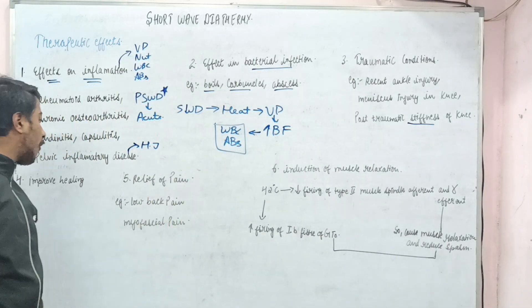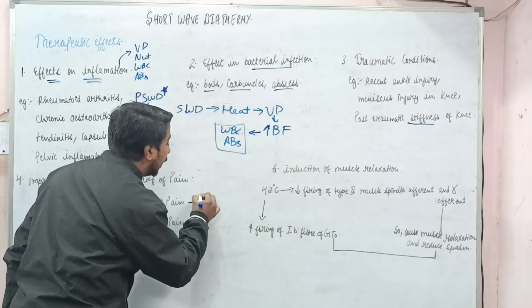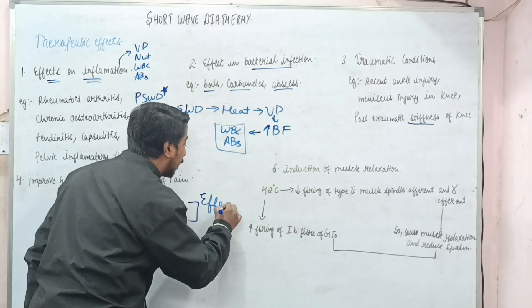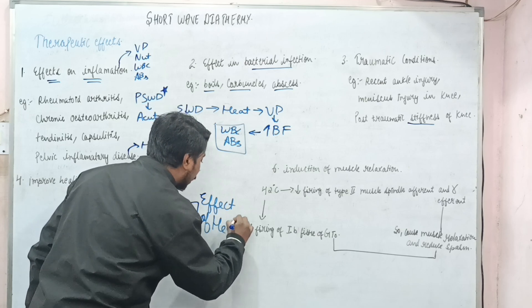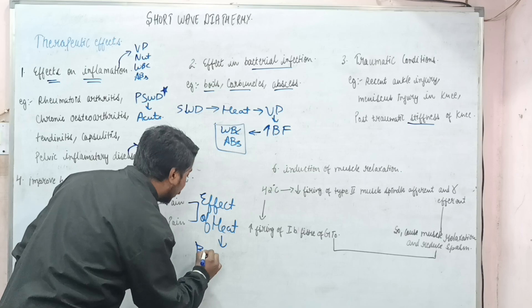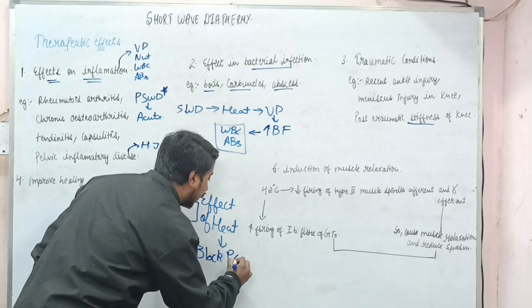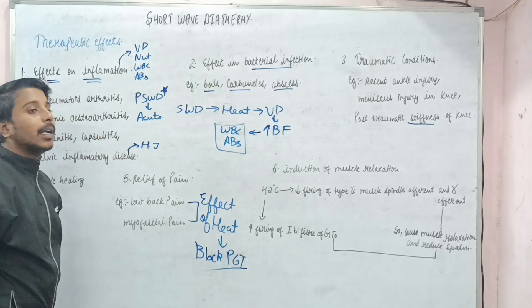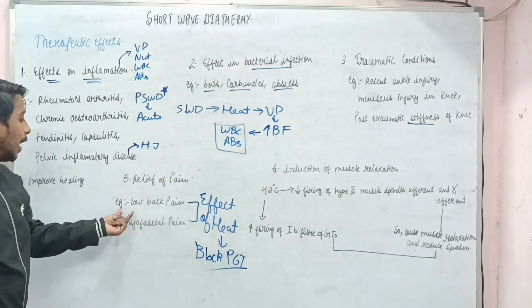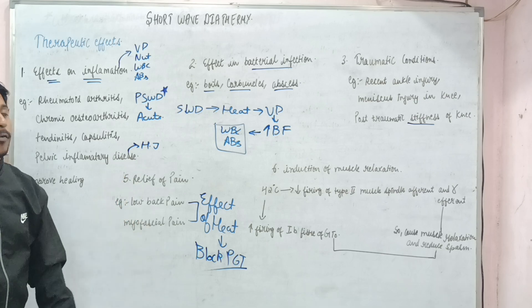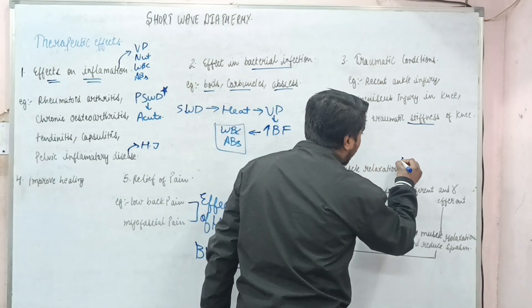Next is relief of pain. It is the effect of heating, which we have studied already. What effect? It will block PGT. What is this PGT? Pain gate theory - it will close the pain gate and reduce the pain, any kind of pain, low back pain or myofascial pain.